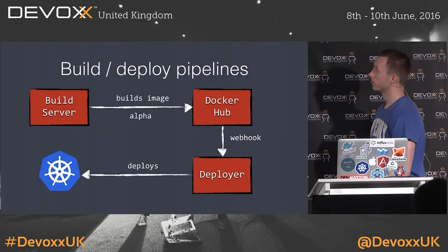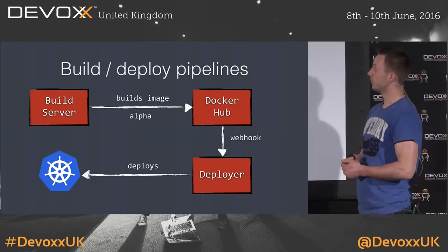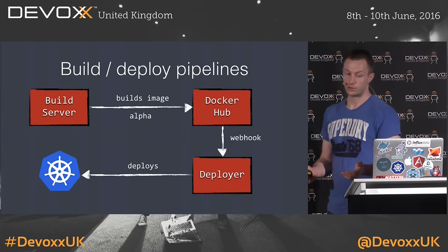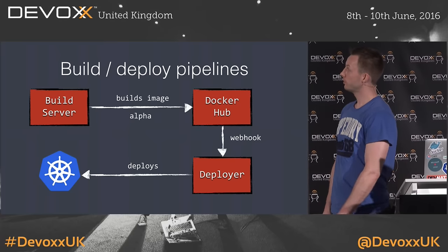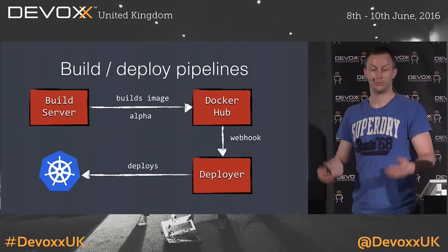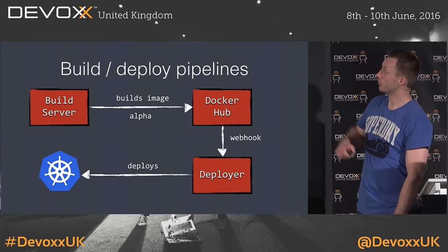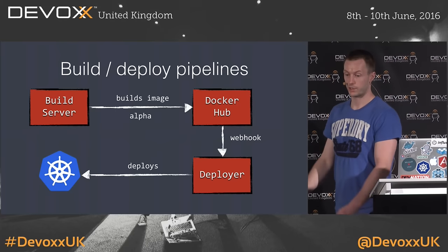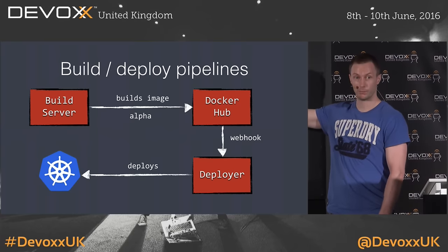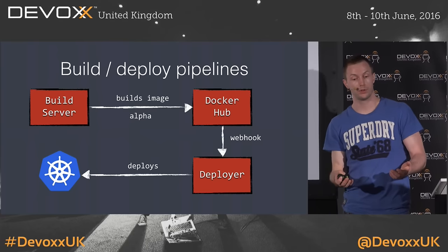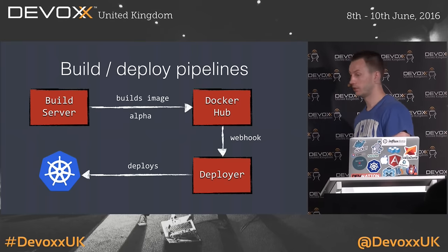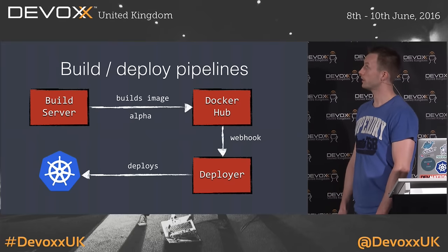This also makes it very easy to completely integrate this in your build pipeline. We can completely automate it: a commit to master causes our build server to build a new Docker image, push it to Docker Hub or another Docker registry. Docker Hub supports webhooks, so we can invoke a webhook on the deployer. The deployer knows which deployment that belongs to, starts a new deployment as we've just seen, and we have a completely automated deployment to potentially production.